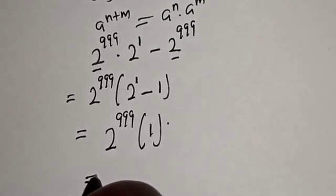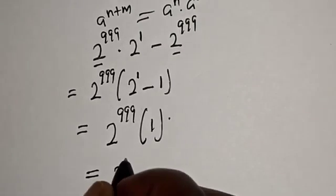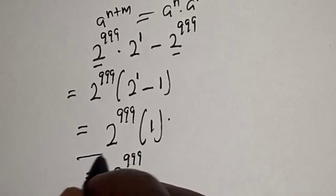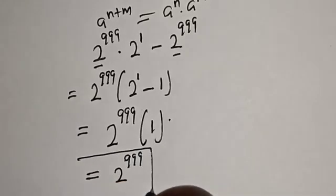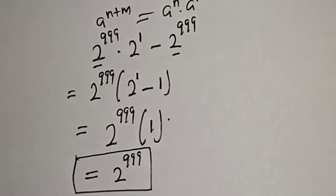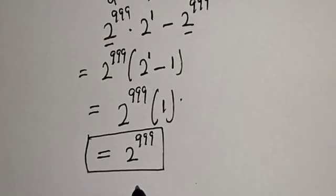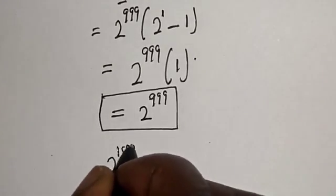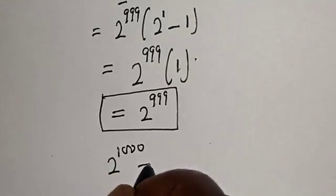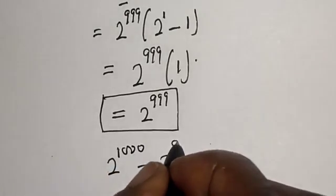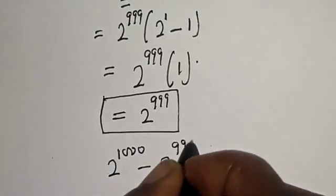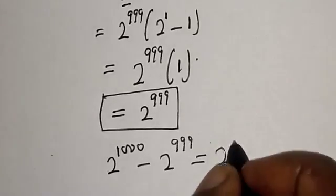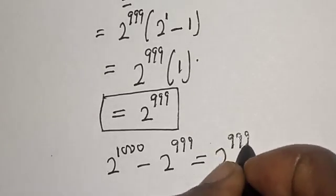Multiplying 2 raised to power 999 by 1 gives us 2 raised to power 999, which is our final answer. Therefore, 2 raised to power 1000 minus 2 raised to power 999 is equal to 2 raised to power 999.